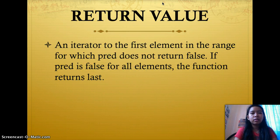The return value is an iterator to the first element in the range for which pred does not return false. If pred is false for all elements, the function returns last.